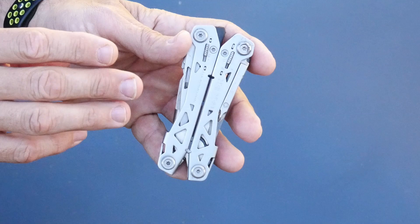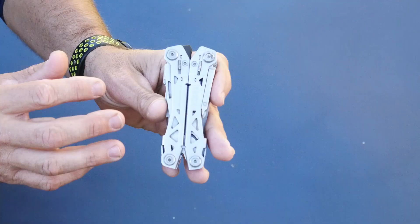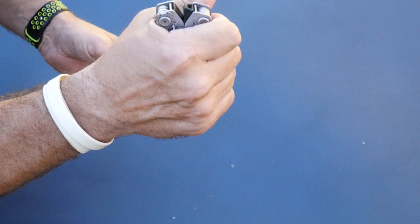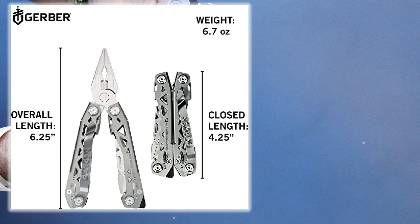The overall weight of this thing, it feels a little heavy. It's almost like a fist load. It's 6.7 ounces. Length when it's in its closed state right here is 4 and a quarter inches, and then when you open it, it's 6 and a quarter.